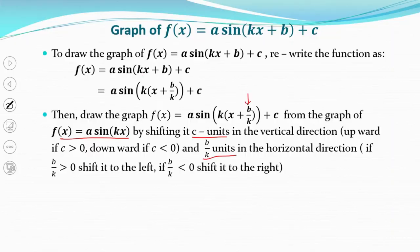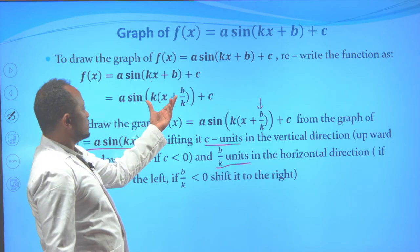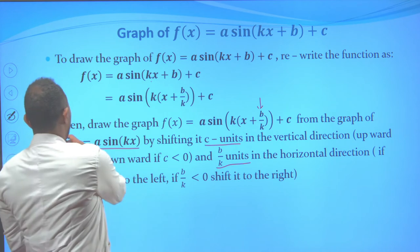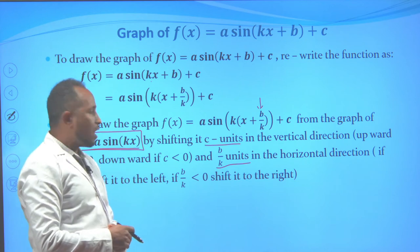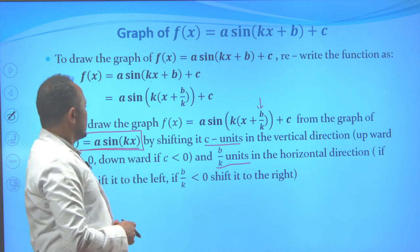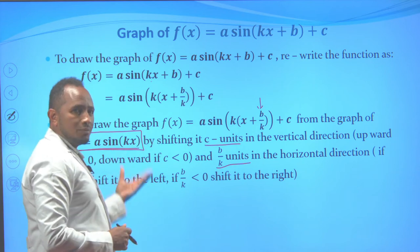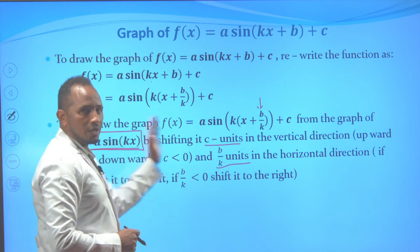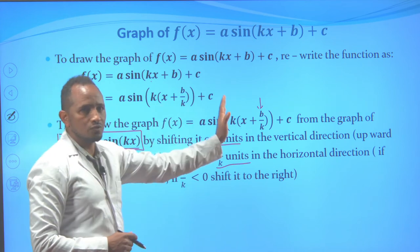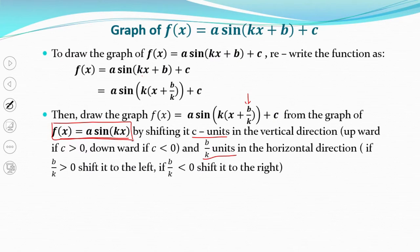Therefore, you shift the graph p/k units horizontally. If p/k is positive, you shift to the left; if p/k is negative, you shift to the right. So simply, you can draw the graph of f(x) = a·sin(k(x + p/k)) + c from f(x) = a·sin(kx) by first shifting c units up or down, then shifting p/k units left or right depending on the sign.